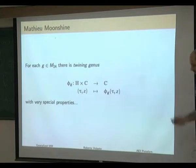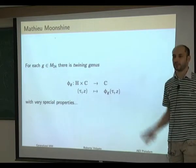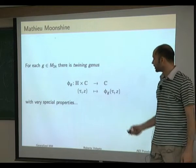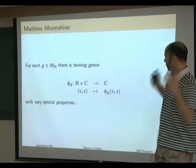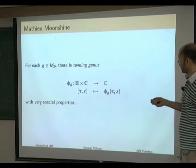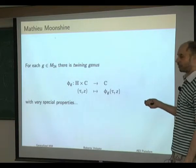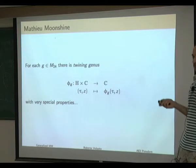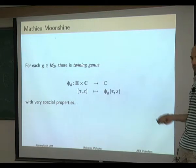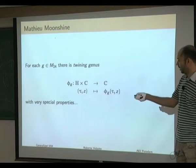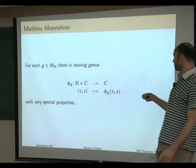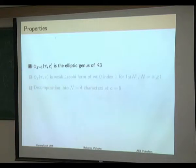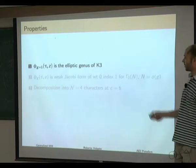Let me start with some basic facts about Mathieu Moonshine from an abstract point of view. We can formulate Mathieu Moonshine as follows: for each element of the Mathieu group M24, or for each conjugacy class, we can assign certain functions called the twining genus, which is a function from the upper half plane times the complex plane into the complex numbers. These functions have very nice properties.